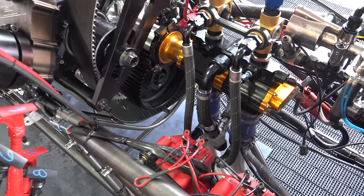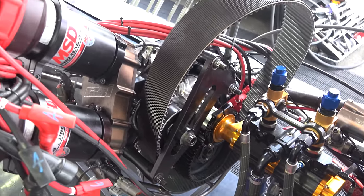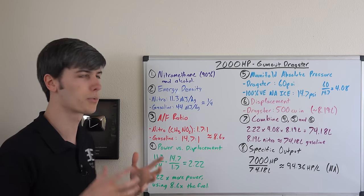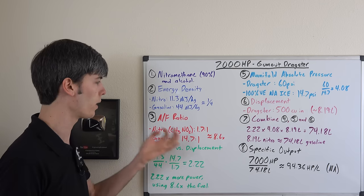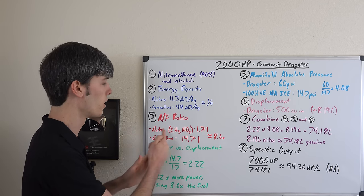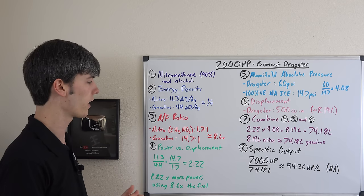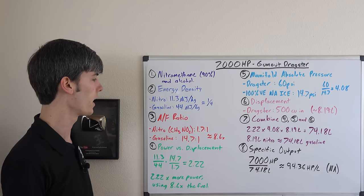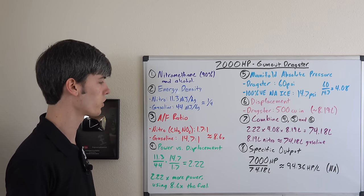Now another critical difference between nitro and gasoline is the air fuel ratio. Nitro has an absurdly low air fuel ratio of 1.7 to 1 and part of the reason for that is it contains oxygen within the fuel itself whereas gasoline does not and has a much higher air fuel ratio of 14.7 to 1.